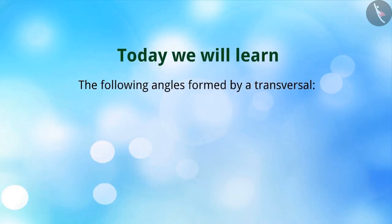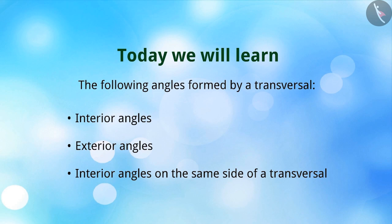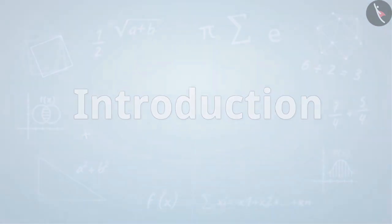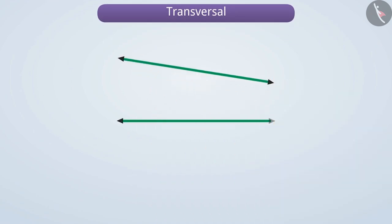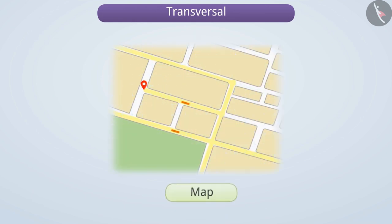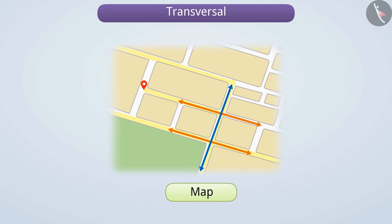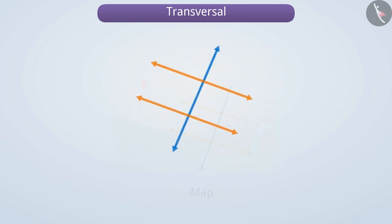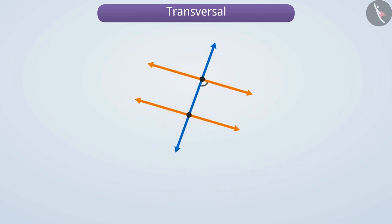Today, we will learn about the following angles formed by a transversal. In the previous video, we learned that a line that intersects two or more lines at different points is called a transversal. Just like a road intersects two roads, we can see a transversal in the form of a road which is intersecting. When a transversal intersects two lines, a total of eight angles are formed. Today, we will understand the angles formed by a transversal. Let us begin.